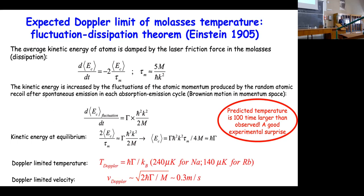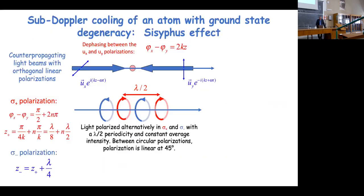The observed temperature was much lower, so the simple model must be too simplistic. The model assumes a two-level atom, but real alkali atoms — rubidium or sodium — have structure in the ground state with multiple sub-levels. These levels are affected differently by light shifts, and the cooling process is much more efficient because of a combination of the dissipative force (radiation pressure) and the reactive force. Both conspire together to lower the temperature further.